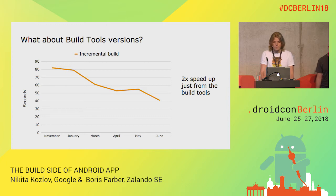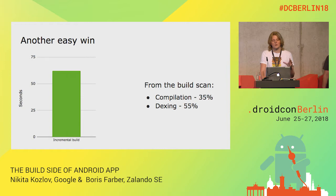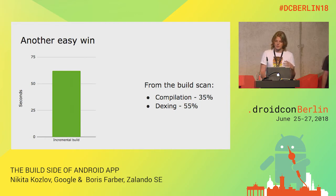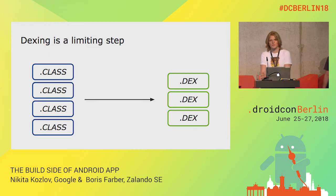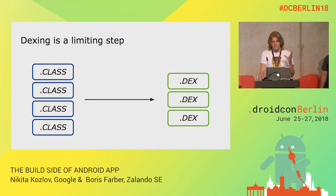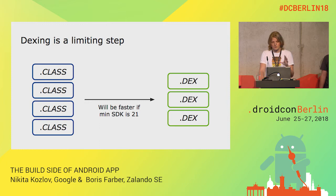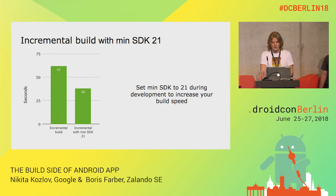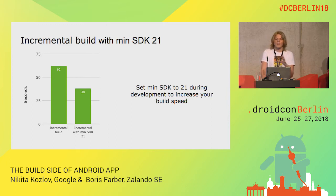There is another thing related to build tools. We generated a project, profiled it with a build scan, and found that compilation took only about a third of the time, while dexing took more than half. Dexing is the process of taking Java class files and turning them into DEX format — a rather slow and complicated process, especially with multiple DEX files. But starting from API 21, there is native support for multi-dex, so the process got much faster. On the very same project, using minSdk 21 made the build time 30% faster. You just make a flavor, and it works. If your app supports earlier versions, you can still benefit from it.